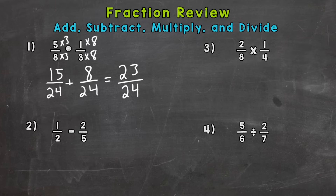Then check to see if your answer can be simplified — if there's a common factor that you can divide both the numerator and denominator by. The only common factor here is 1, so we are in simplest form. Our answer is 23 twenty-fourths.